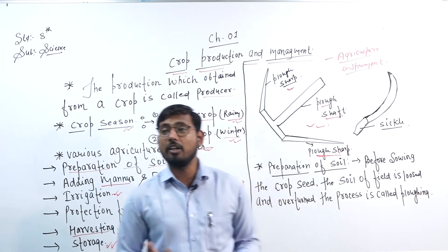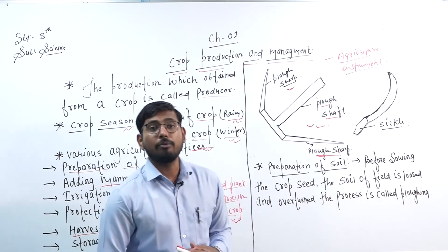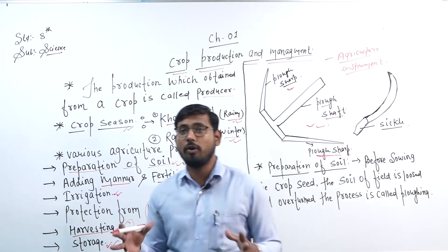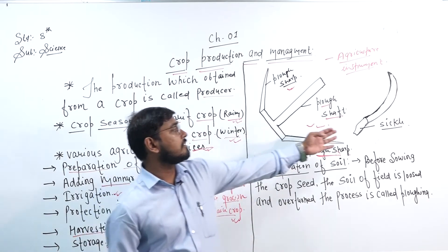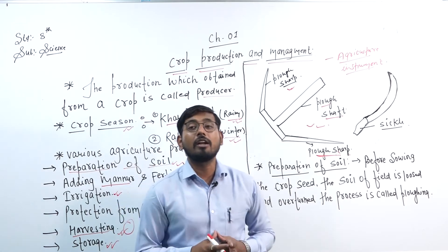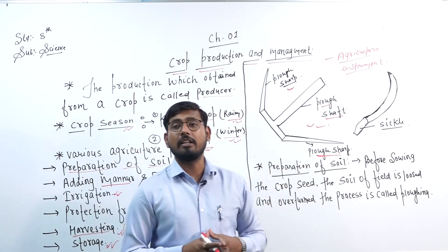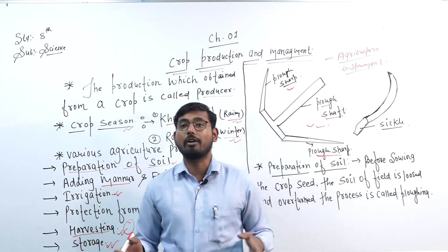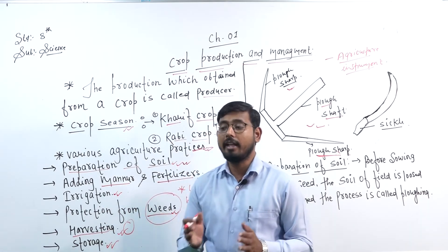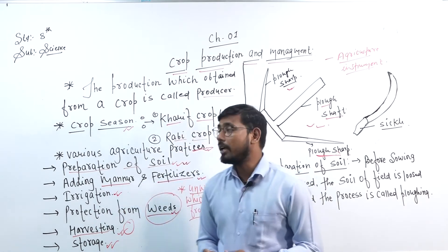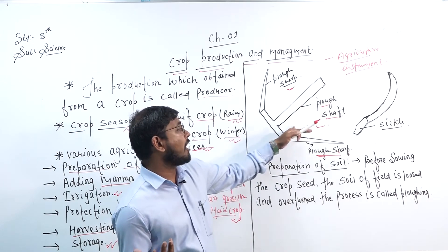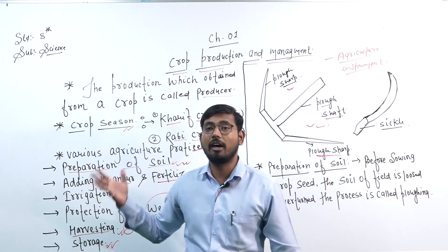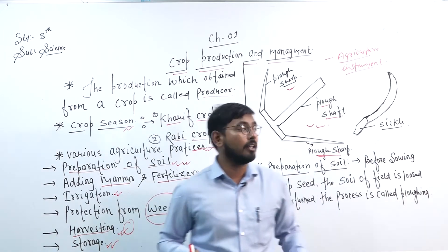Another instrument shown is used during harvesting — when any crop has matured, we cut it. The third diagram shows a seed drill. A seed drill places seeds at a particular distance in the soil. It is an agriculture instrument like the plough, used when we prepare the soil and during sowing.